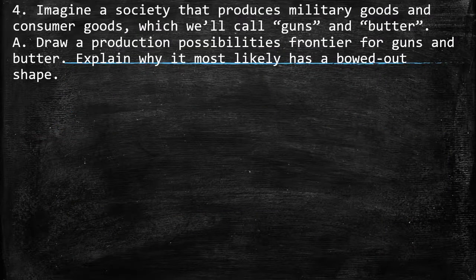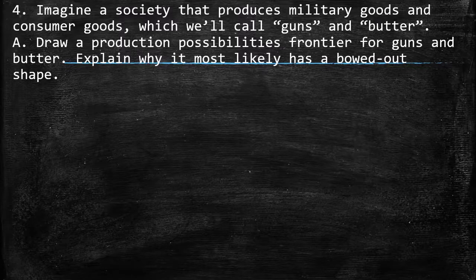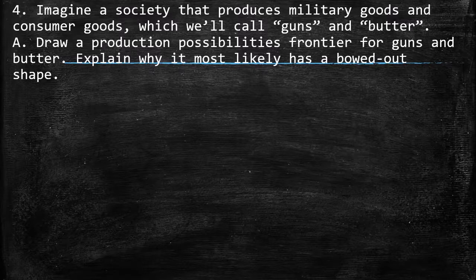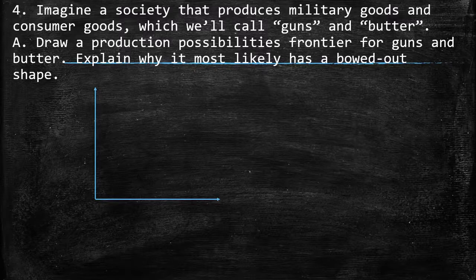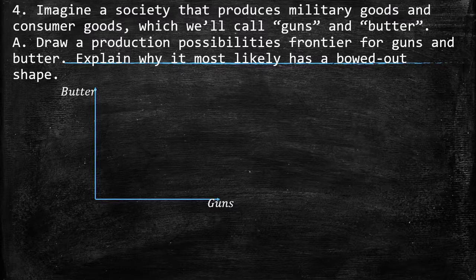Fourth exercise: imagine a society that produces military goods and consumer goods — called guns and butter. Draw a production possibilities frontier for guns and butter and explain why it most likely has a bowed-out shape. First we label the axes: guns on the x-axis and butter on the y-axis. The frontier has a bowed-out shape.